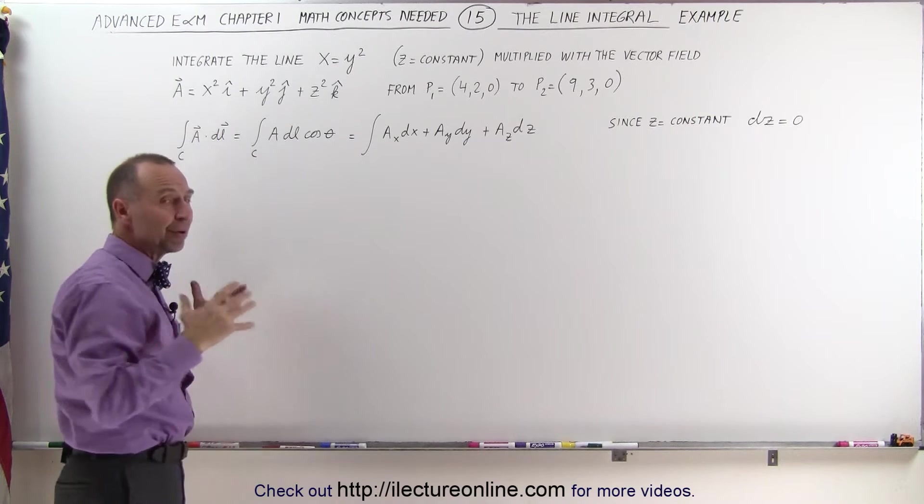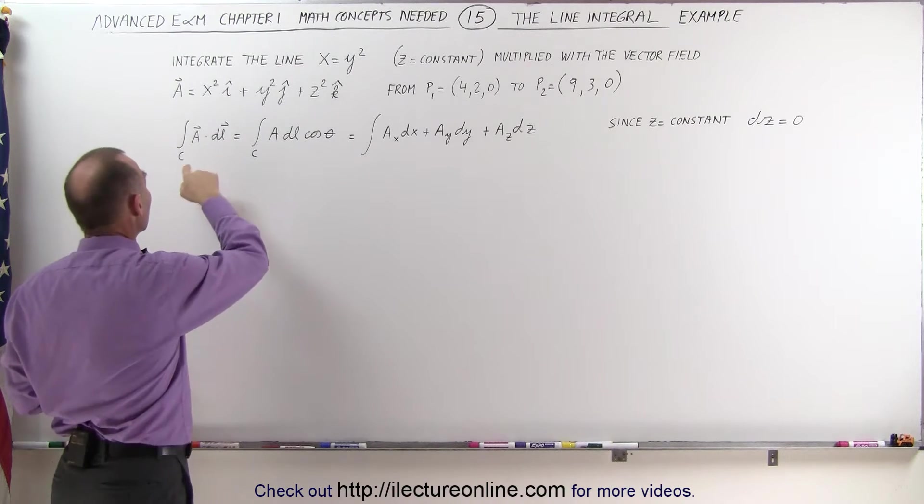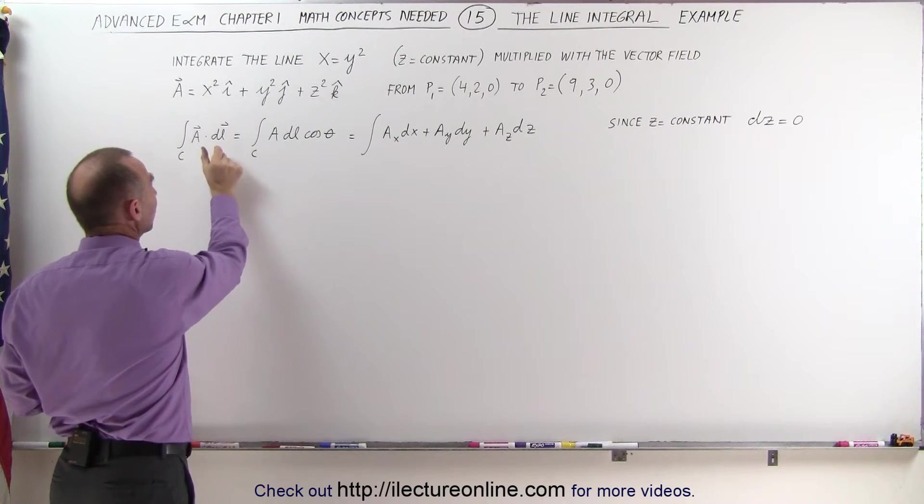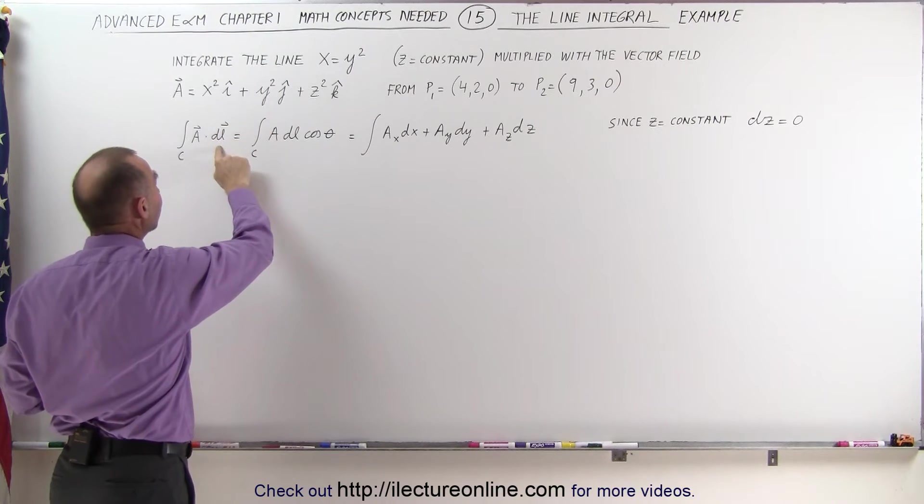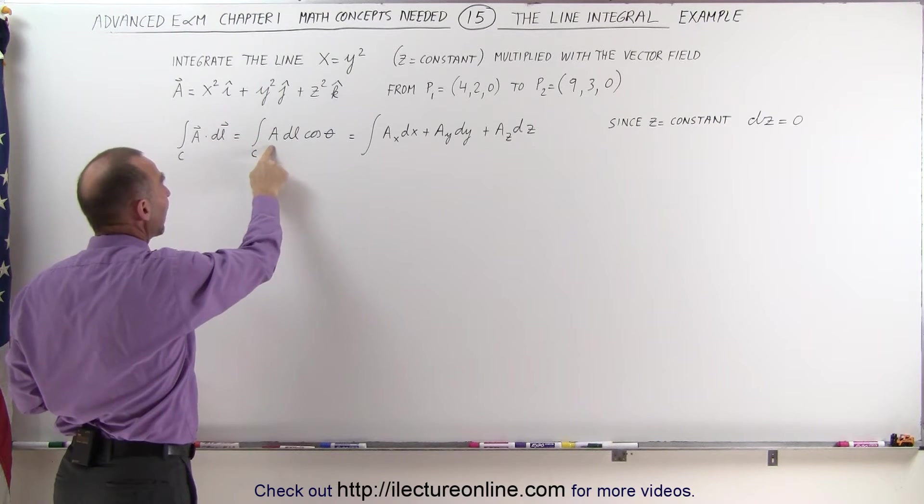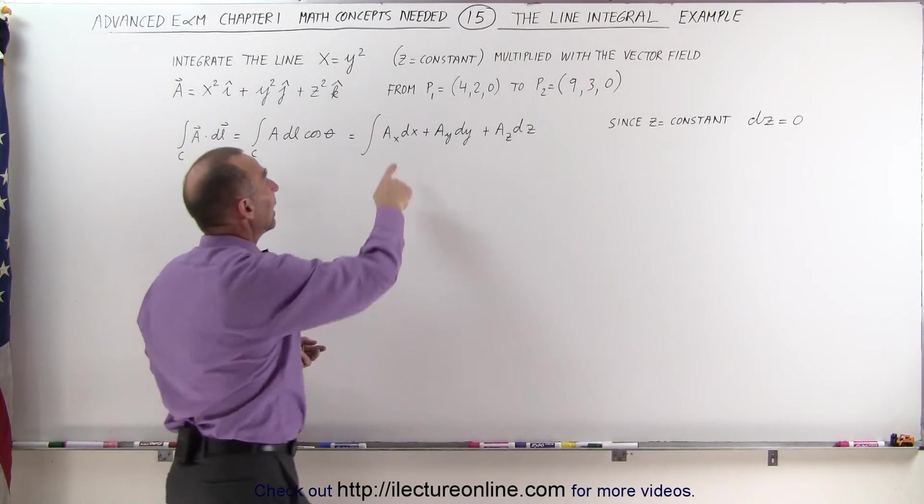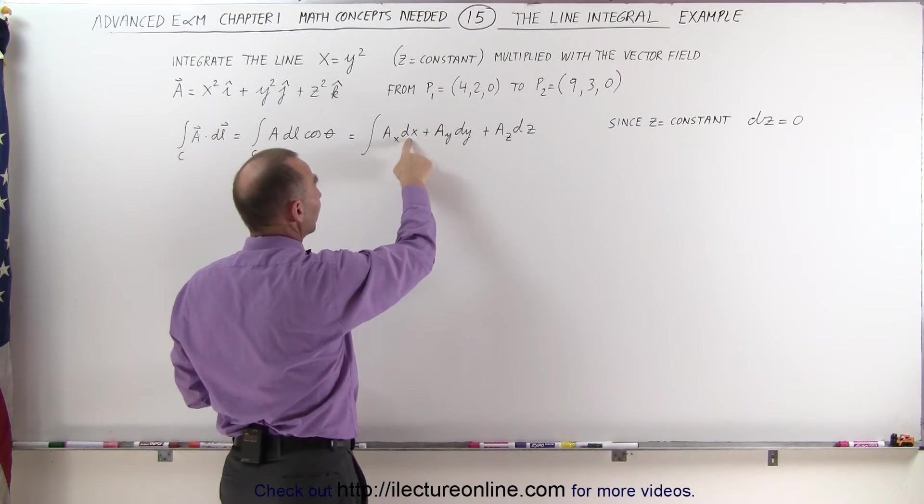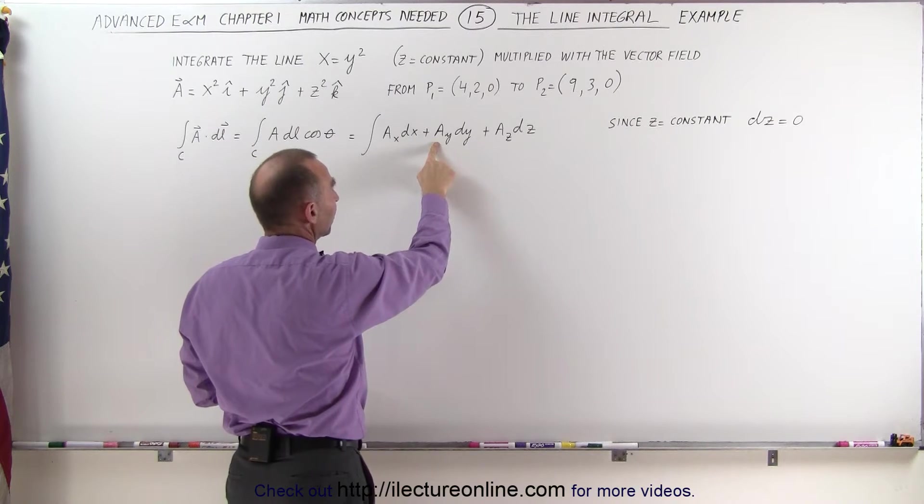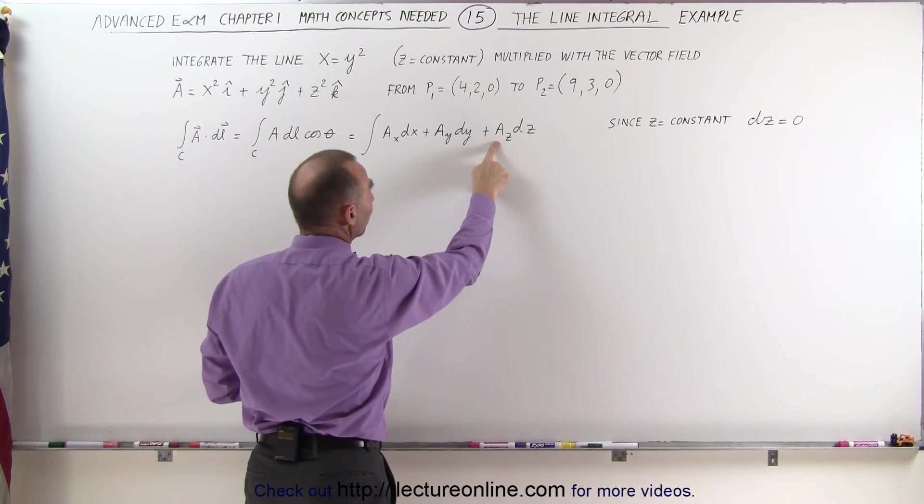Now notice that from the previous video we realized that the integral of a vector field multiplied by a small line segment along that line, DL, can be represented as A dot DL times the cosine of theta, or it can also be represented by the x component of the vector field dx plus the y component of the vector field dy